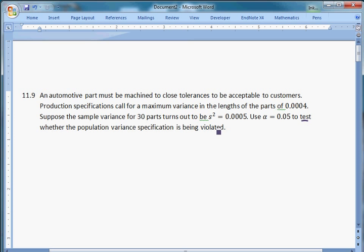So we want to test whether this is being violated. And if it's not being violated, then what does it look like? Well, then under the null, we're going to assume it's not being violated to see if we can prove that it is. Under the null, the population variance is at most, maximum variance, no greater than, or less than or equal to, 0.0004.